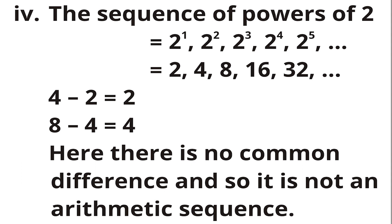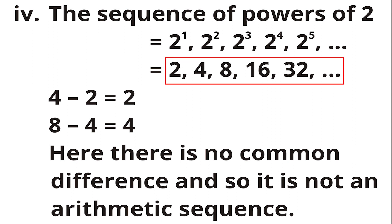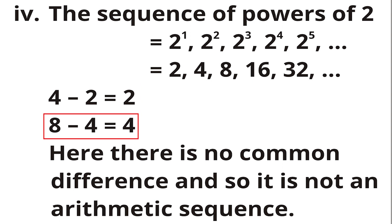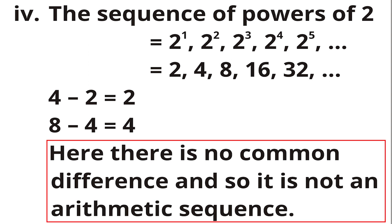The fourth sequence is powers of 2: 2 raised to 1, 2 raised to 2, 2 raised to 3, 2 raised to 4, 2 raised to 5, which gives 2, 4, 8, 16, 32. Checking: 4 minus 2 is 2, but 8 minus 4 is 4 — the differences are not constant, so this is not an arithmetic sequence.